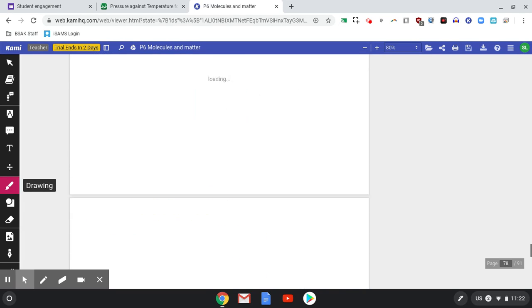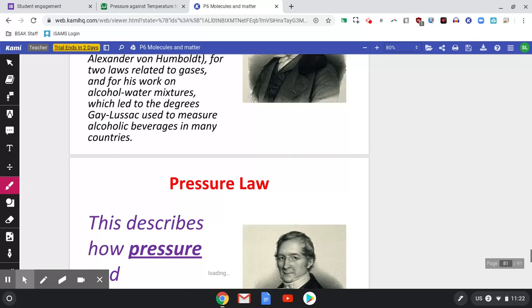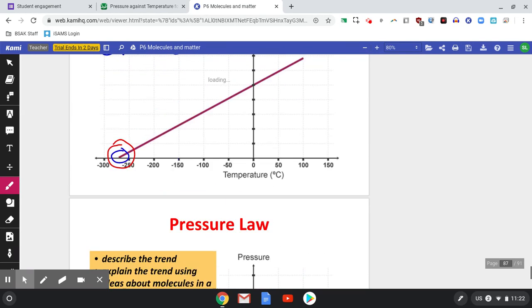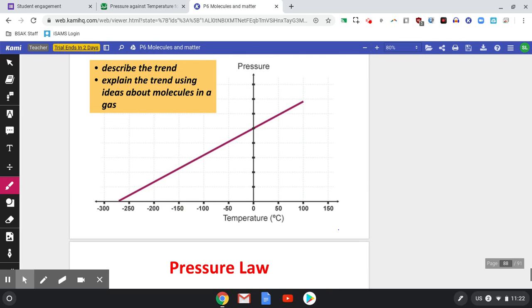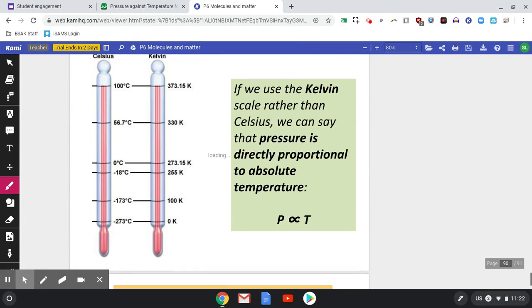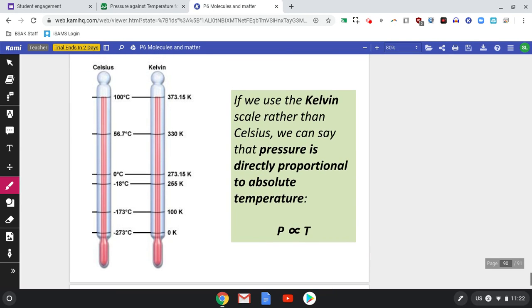So this minus 273 temperature, it's called absolute zero. Now this is why scientists have invented another temperature scale. We're all used to Celsius. Celsius was invented quite simply: the zero point was the temperature at which water freezes and the hundred point was the temperature at which water boils, and it was split into a hundred increments.